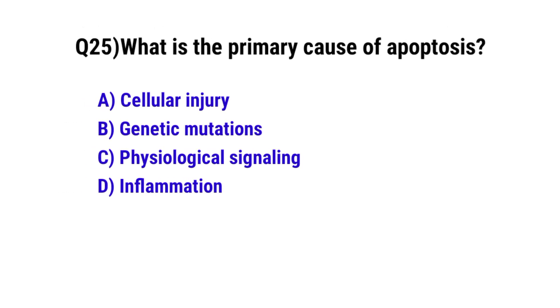Question number 25. What is the primary cause of apoptosis? The correct option is C. Physiological signaling.